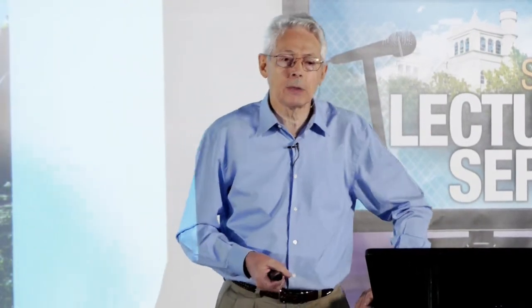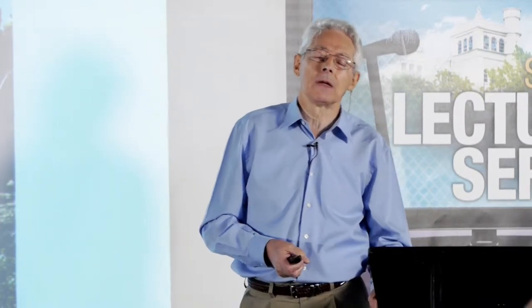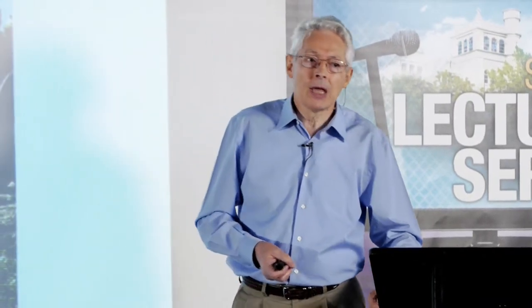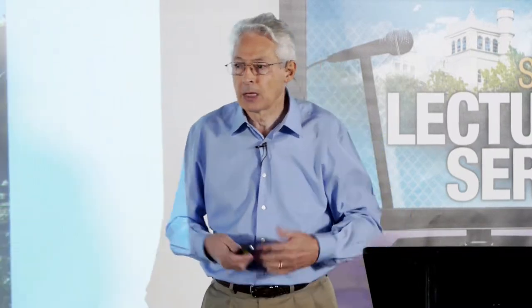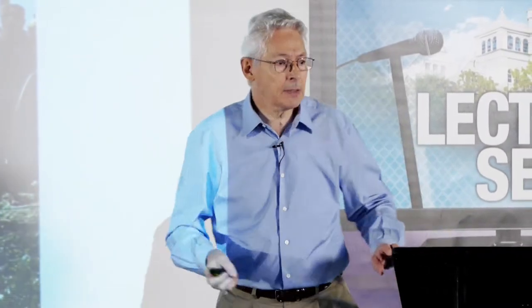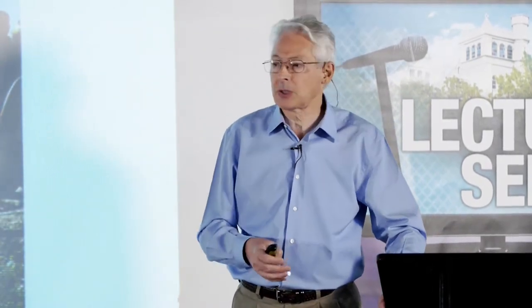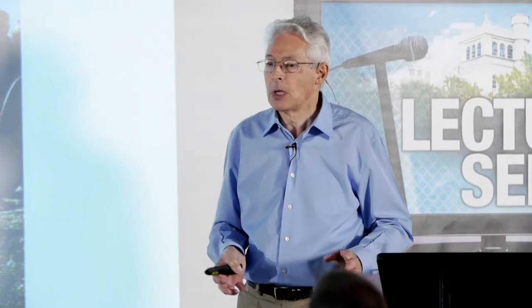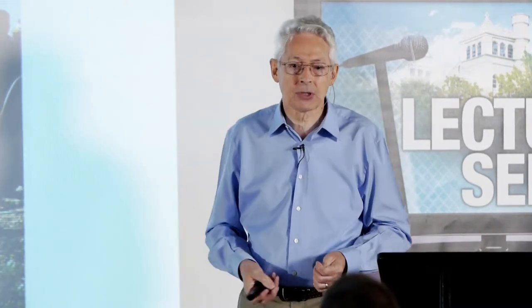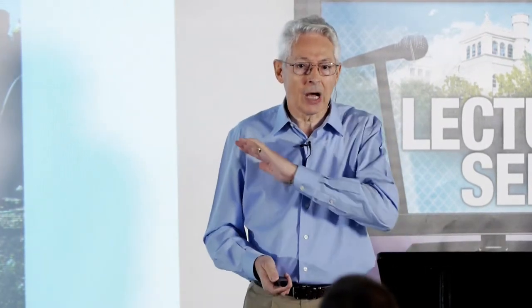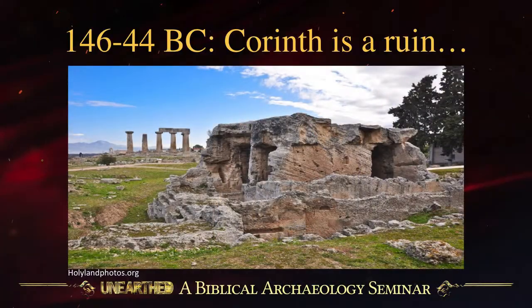Mummius waited with his army outside Corinth — he didn't go in immediately, but waited outside for three days. Then he sent his troops out, rounded up all the stragglers and runaways from the Corinthian army and killed them, and killed the prisoners of war. He went into the city, took all the women and children as slaves, looted the city of anything of value, sent it off in ships to Rome, and burned the city. It was utterly destroyed — nothing remained.